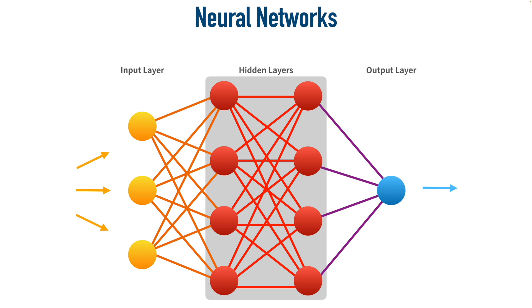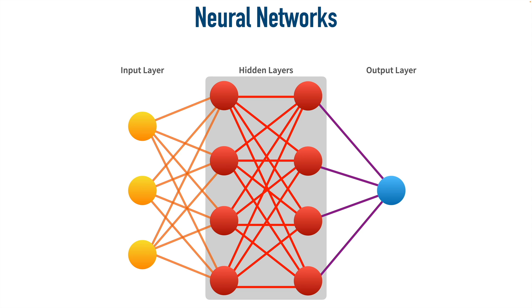As a basic example, we might input the value of pixels in an image — let's say an image of a dog. To make it easy to visualize, let's say we can represent that image with just three pixels, and the value of each of those pixels goes into one of these neurons. We see that calculation goes from the input layer through the hidden layers to the output layer, where it says: this is a dog. Our neural network knows that based on its training data. Now, what sort of math is really going on between these neurons? Let's take a closer look at that.